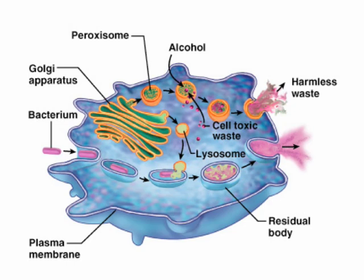In the picture, you can see that a bacterium is being endocytosed into a vesicle. That vesicle then fuses with a lysosome coming off the Golgi apparatus. It releases its digestive enzymes, breaks down the bacterium, and eventually releases the harmless waste to the outside of the cell via exocytosis.